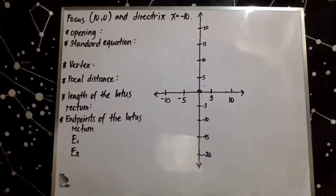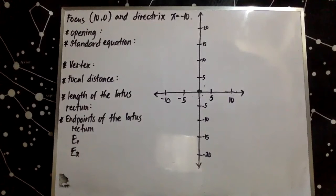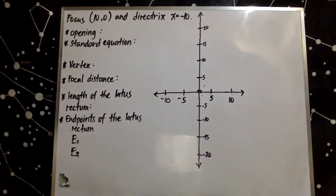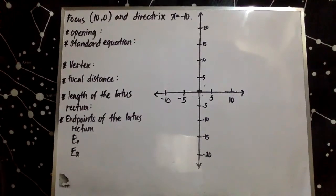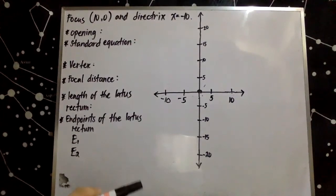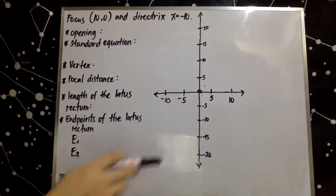Good day everyone. Today we will learn how to determine the parts and properties of a parabola given focus at (10, 0) and directrix x equals negative 10. The first thing we need to do is plot or sketch the given parts on a Cartesian plane.